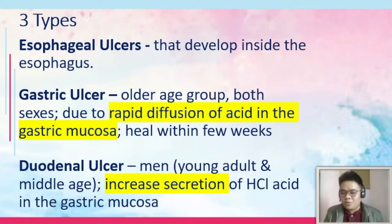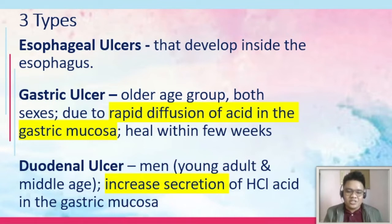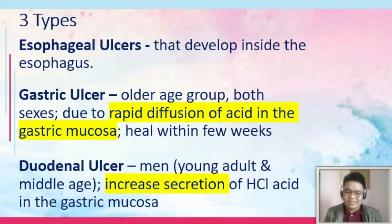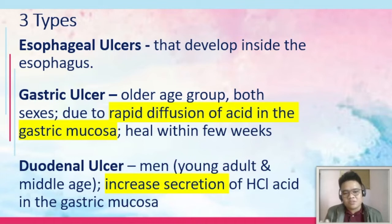There are three types of ulcers in peptic ulcer disease. First, esophageal ulcers, which develop inside the esophagus. Second, gastric ulcers, which usually occur in an older age group — ages 55 to 70 — with both sexes. Gastric ulcer is usually due to the rapid diffusion of acid in the gastric mucosa and has a tendency to be self-remitting, healing within a few weeks. The location is usually in the body or antrum of the stomach, about one inch from the pylorus.